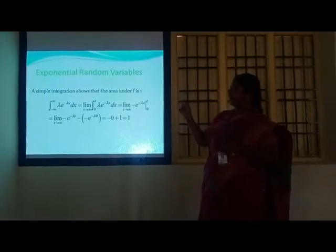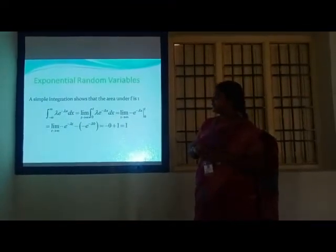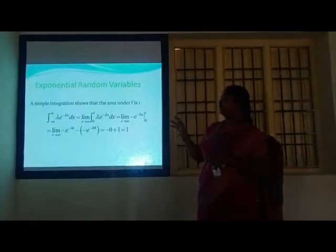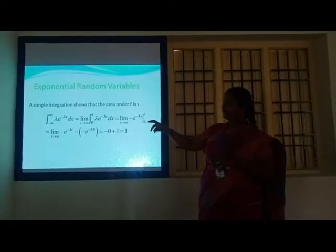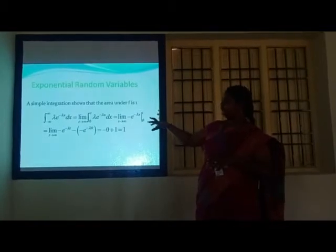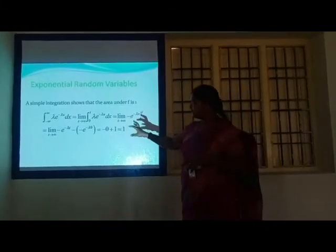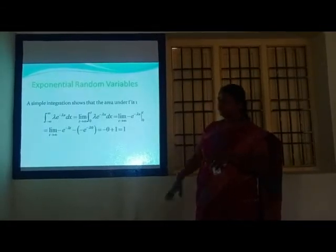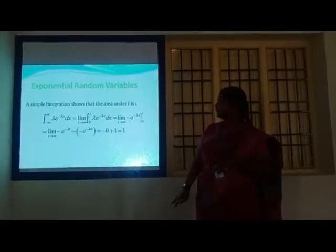Exponential random variables: a simple integration shows that the area under the curve is 1. Taking the limit from minus infinity to plus infinity, as t tends to infinity, the integral from 0 to t of λe^(−λx) dx equals 1.